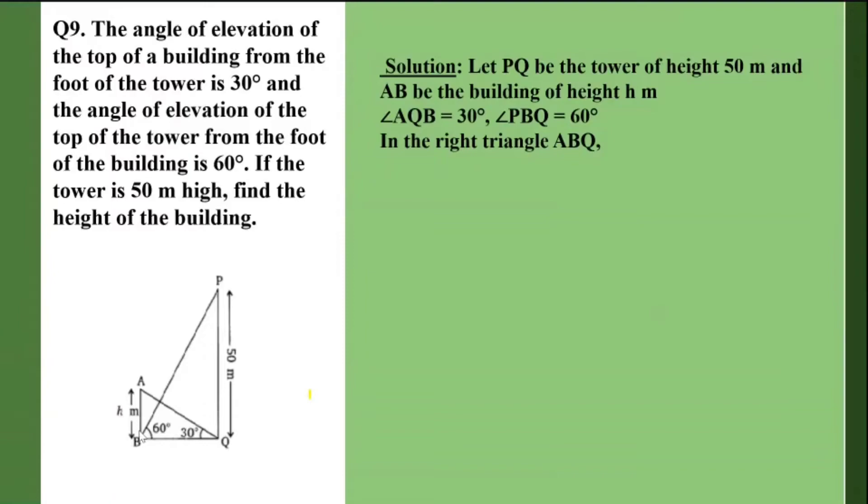So I take first of all triangle ABQ. In triangle ABQ, if I take tan 30, tan 30 will be equal to AB upon BQ. I get AB is equal to h. BQ I need to find out. And tan 30 is 1 upon root 3.